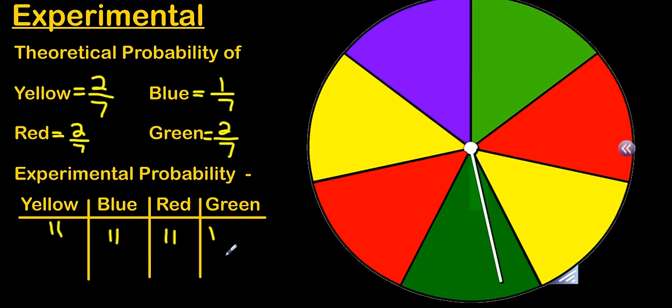The green only landed 1 out of 7. The red landed 2 out of 7, which was what we predicted. The yellow also landed 2 out of 7, which we predicted. But the blue landed 2 out of 7, and we only predicted that it would land 1 out of 7 times. If we perform this experiment a hundred more times, the more times we perform it, the more likely it is that these numbers in experimental probability will begin to resemble, or more closely resemble, the theoretical probability.